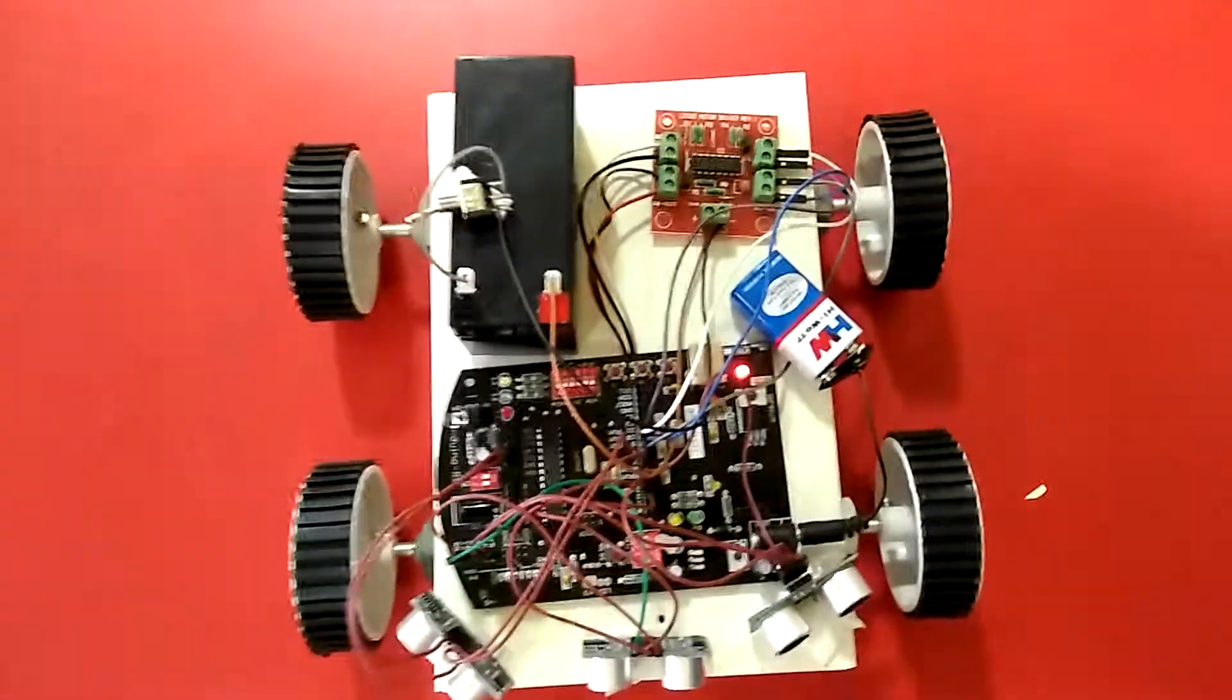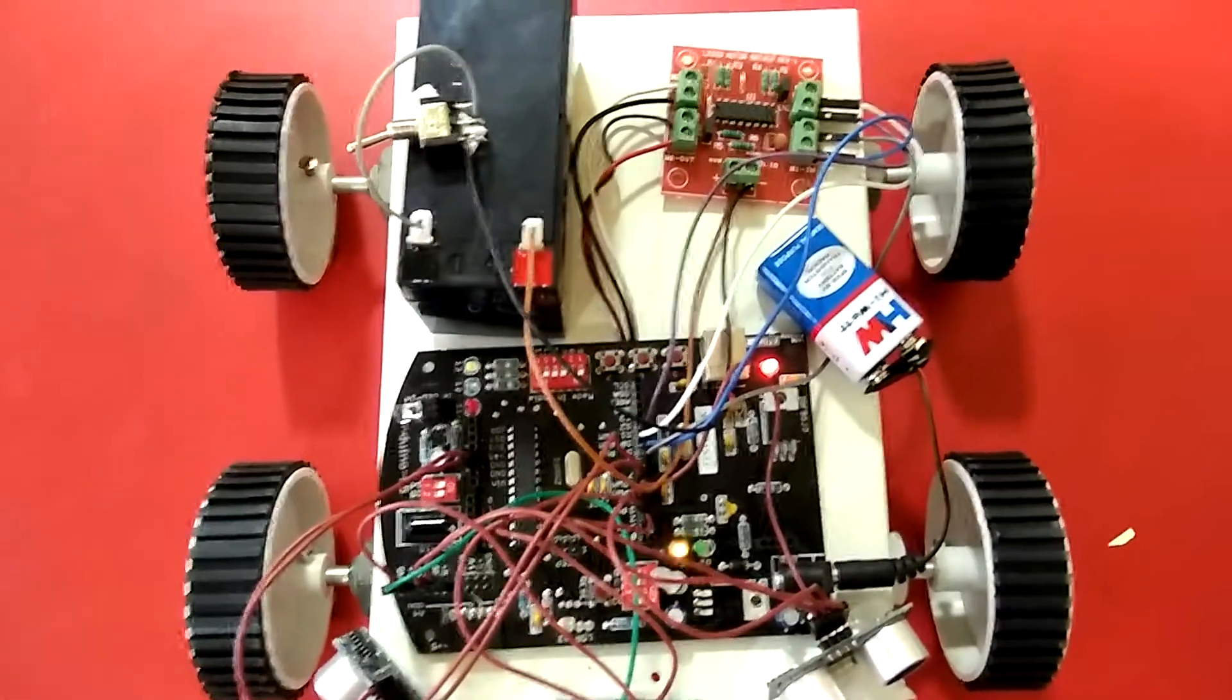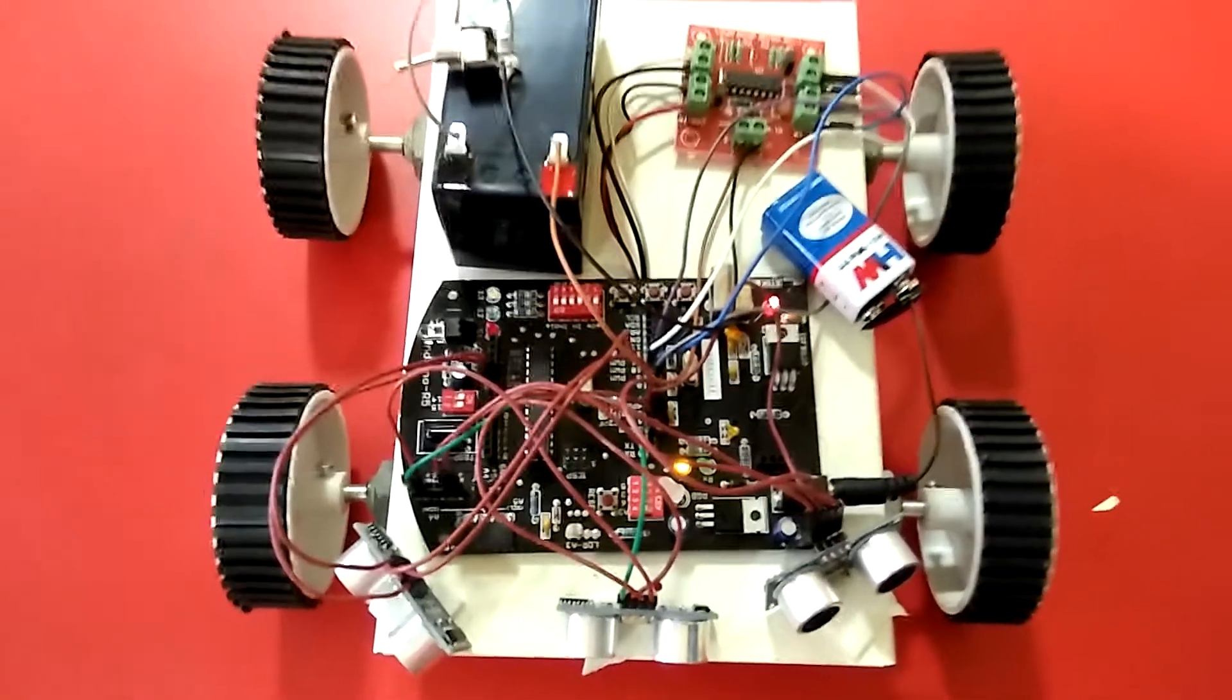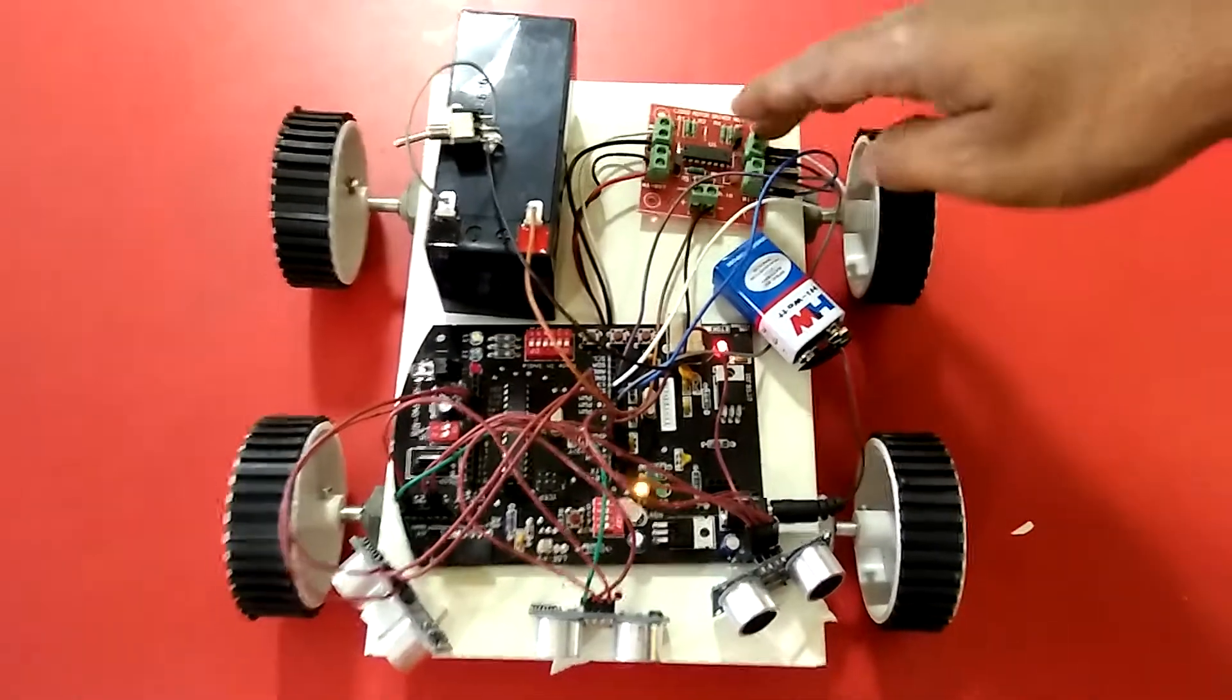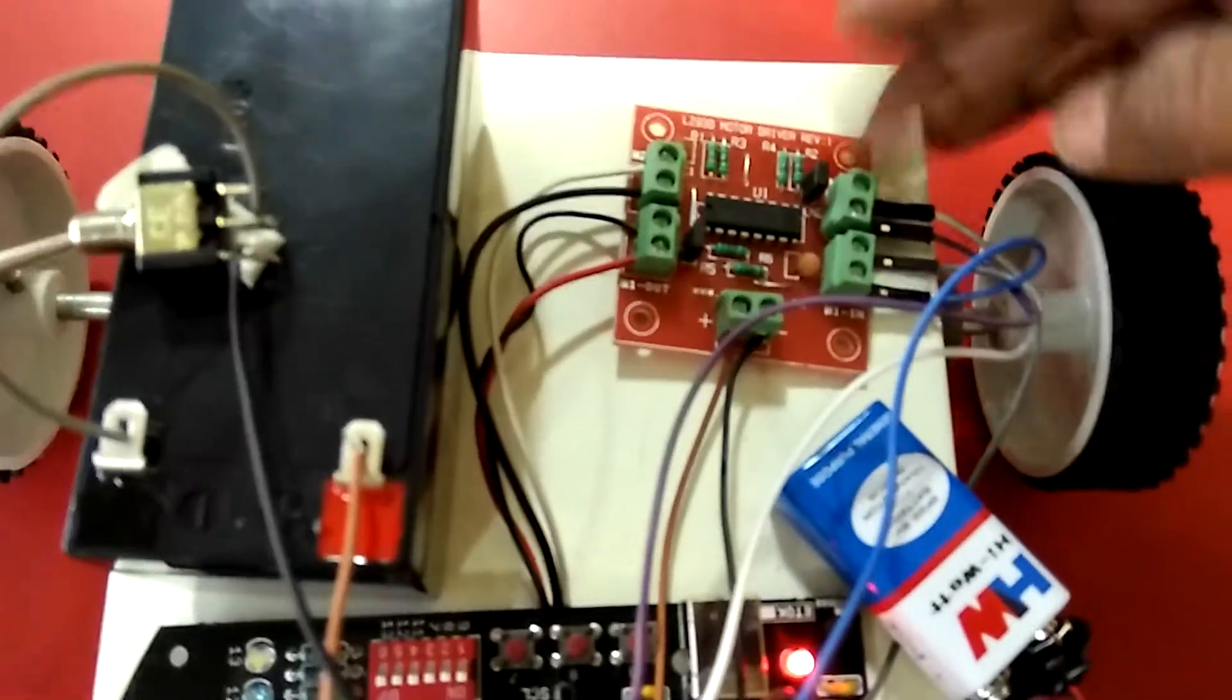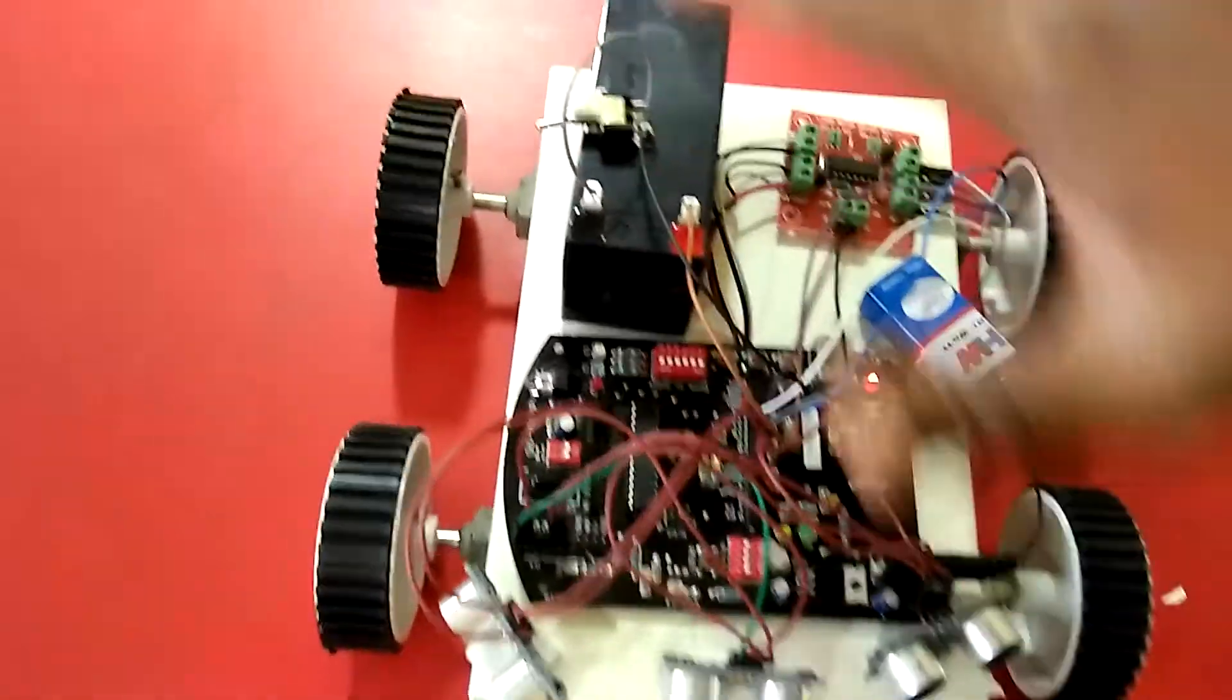Hi everyone, this is another project of mine: an ultrasonic barrier avoidance robot. Here I am using an Arduino board to control the entire unit, and I am using a motor driver board to control the motors. And I am using a 12V 1A battery to power the entire unit.